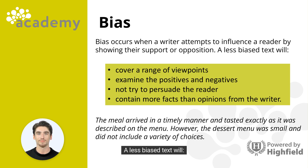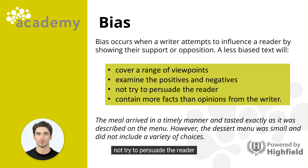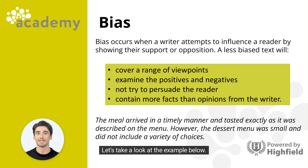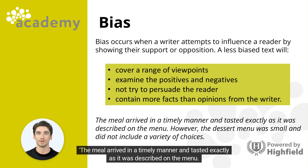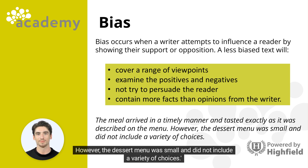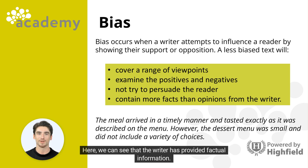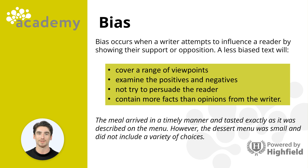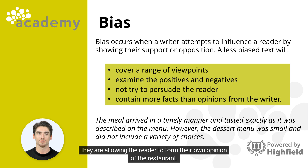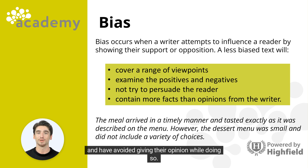A less biased text will cover a range of viewpoints, examine the positives and negatives, not try to persuade the reader, and contain more facts than opinions. For example: 'The meal arrived in a timely manner and tasted exactly as it was described on the menu. However, the dessert menu was small and did not include a variety of choices.' Here, the writer has provided factual information, listed both positives and negatives, avoided giving their own opinion, and not tried to persuade the reader.